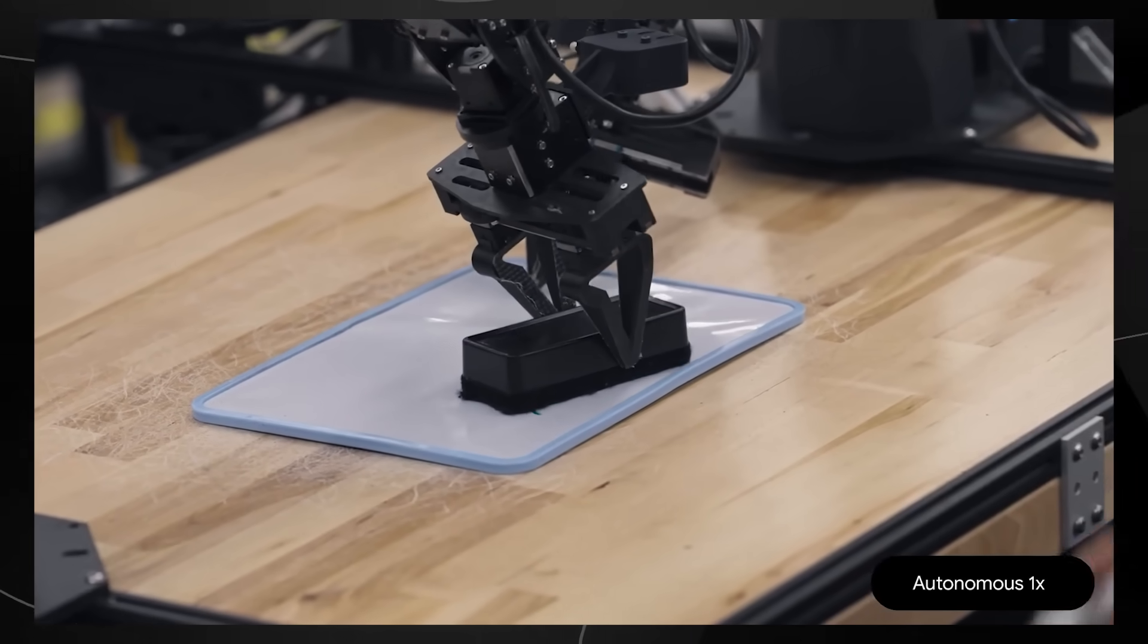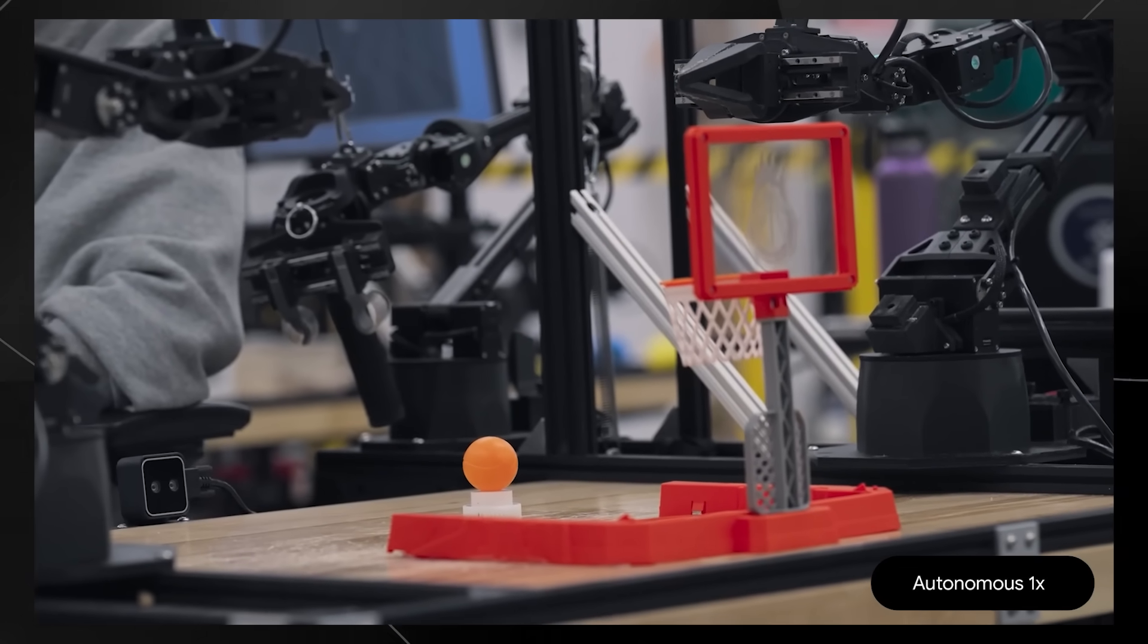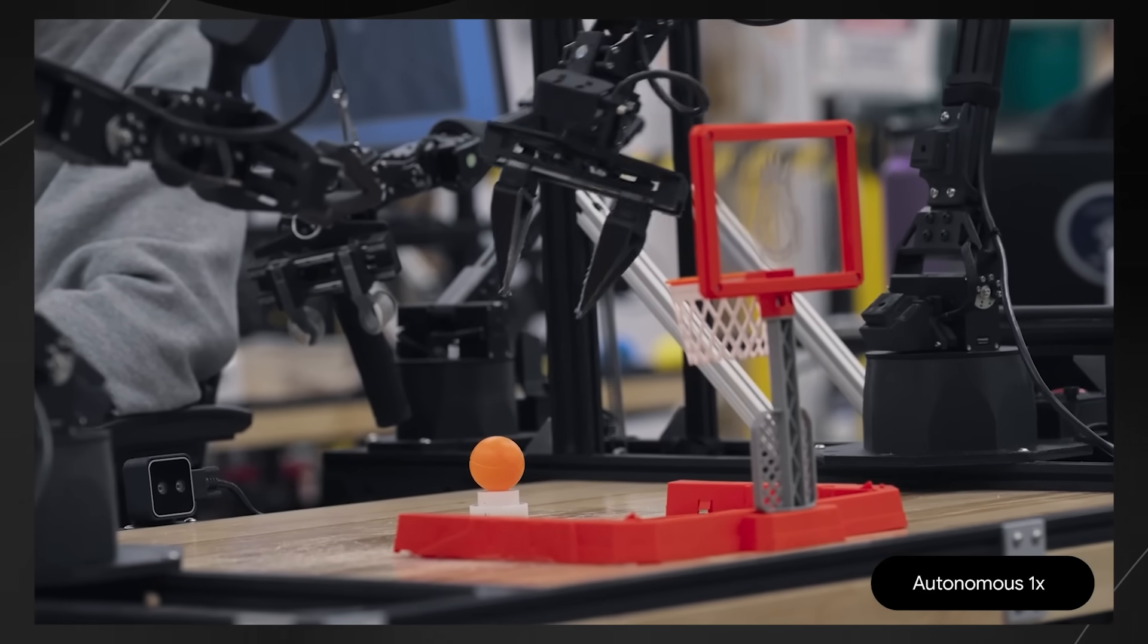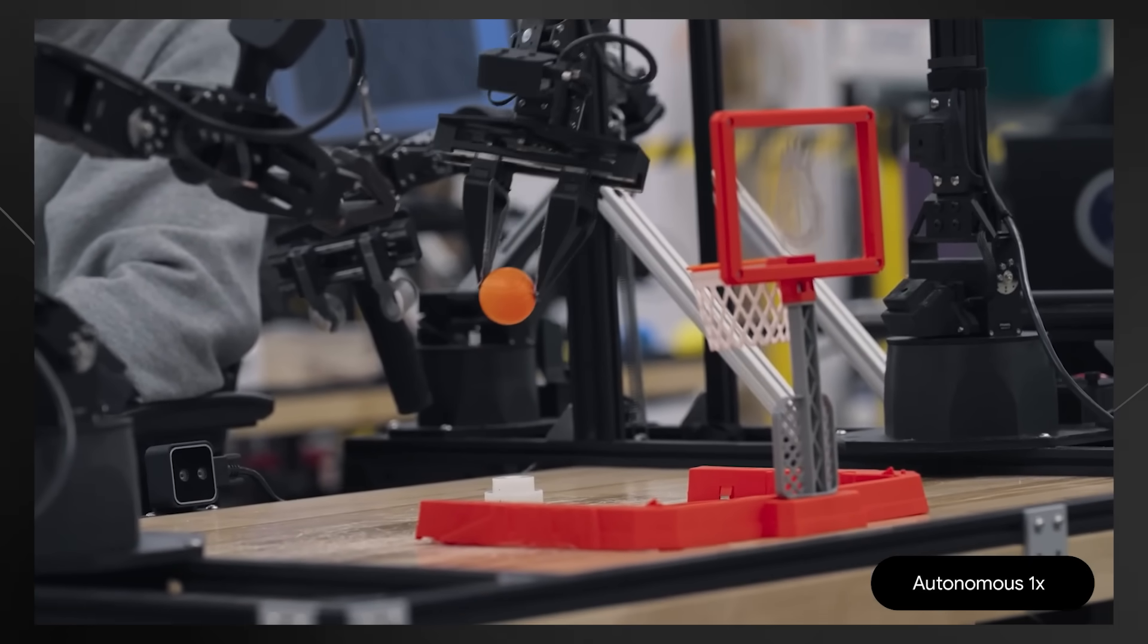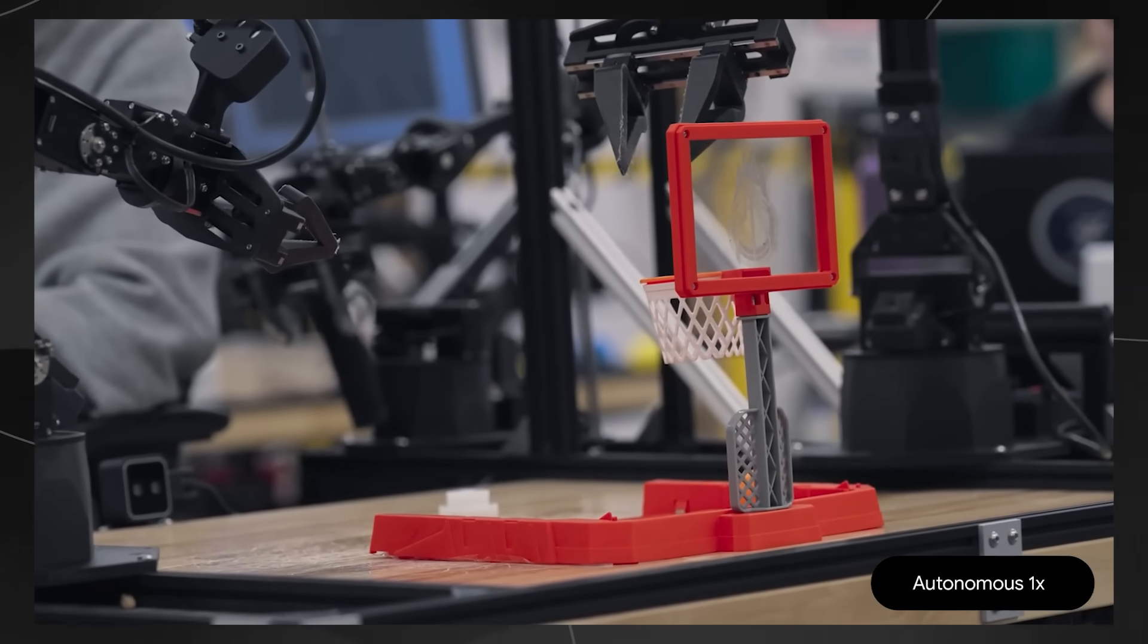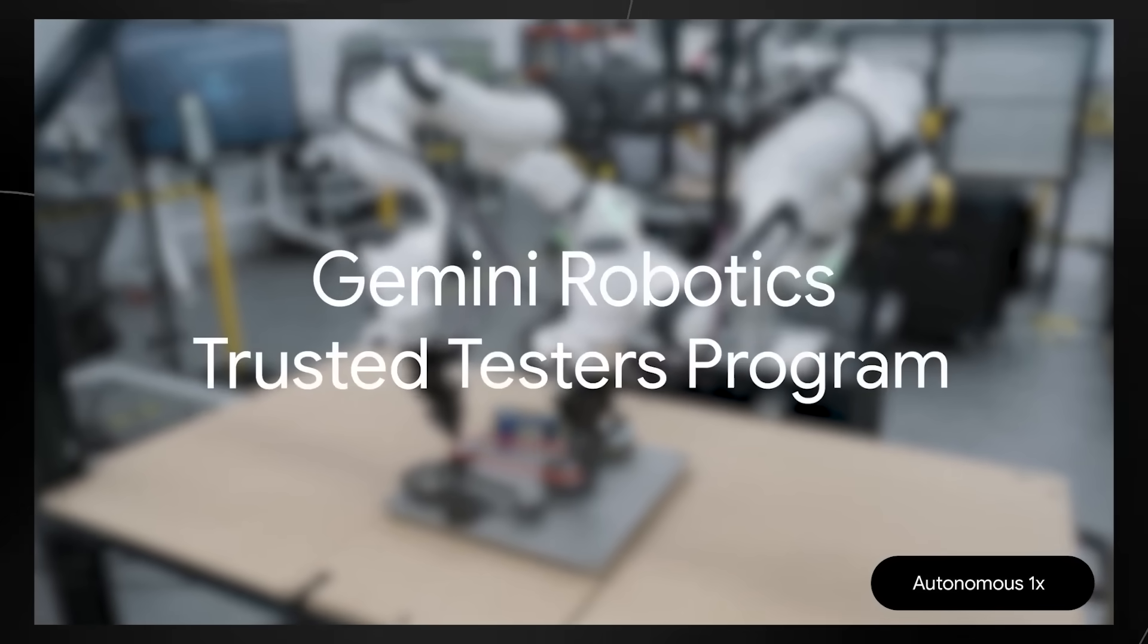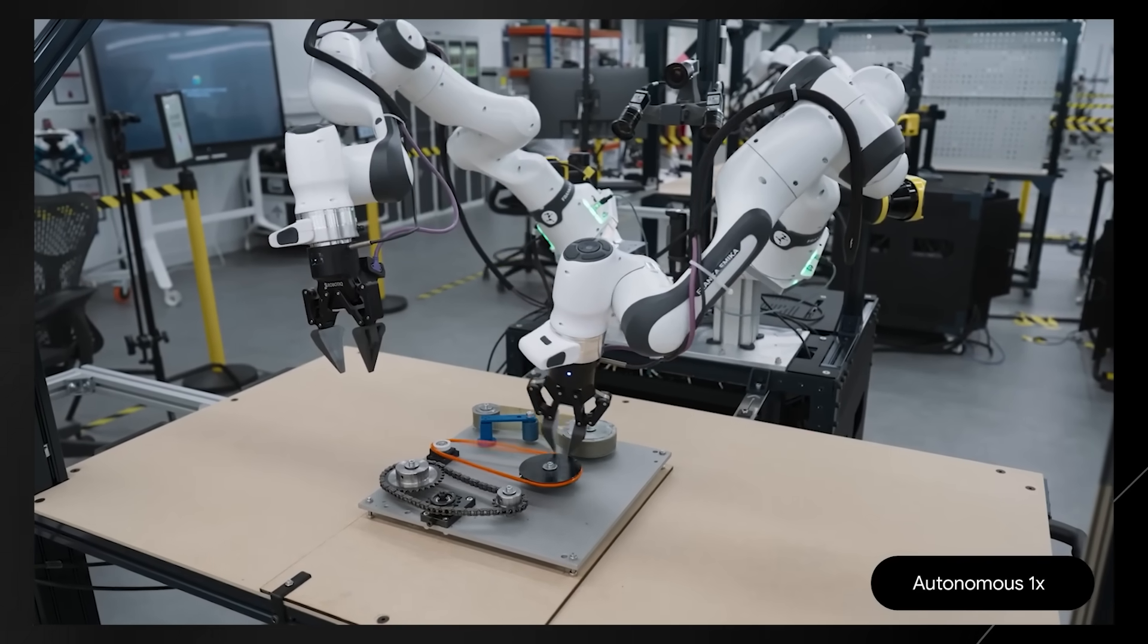This same model can generalize to tasks like this one that it's never been trained to do. Pick up the basketball and slam dunk it. Keep in mind these are objects the robot has never seen before. But by leveraging Gemini 2.0's understanding of concepts like basketball and slam dunks, the robot figures out the task. We're now inviting more partners to join our trusted testers program where we're working together to build the next generation of robotic AI agents.